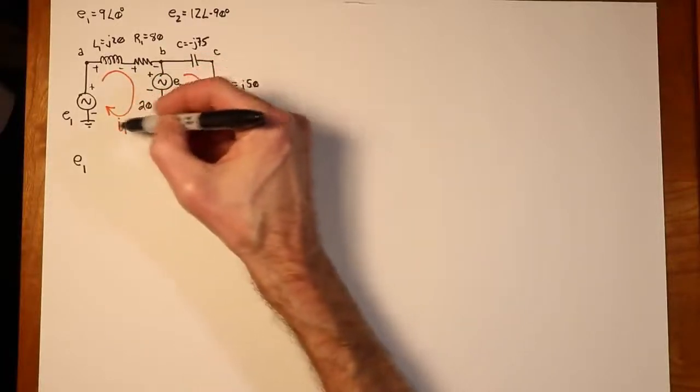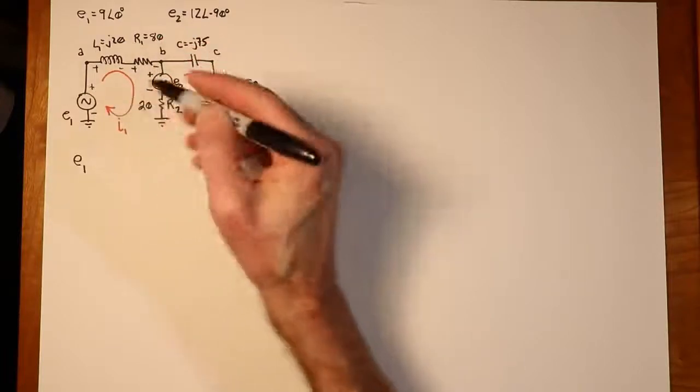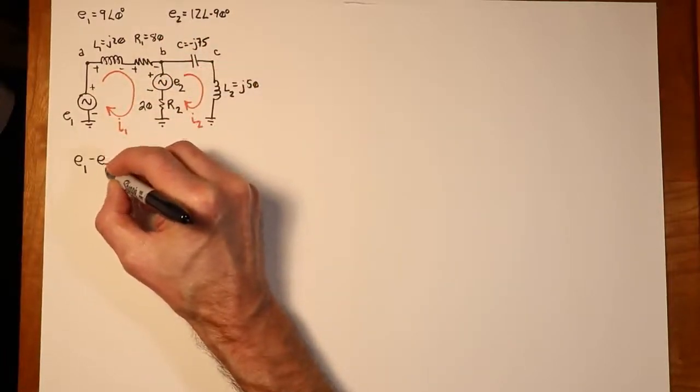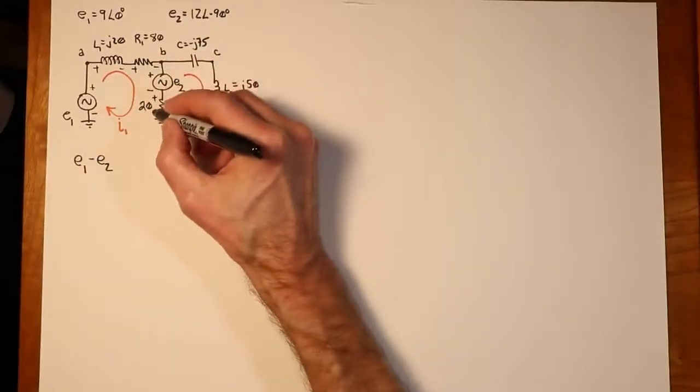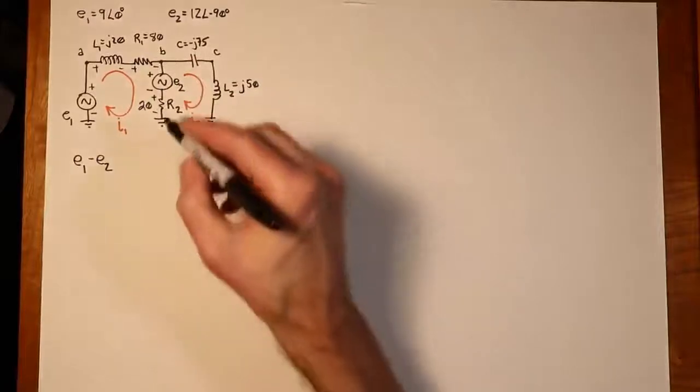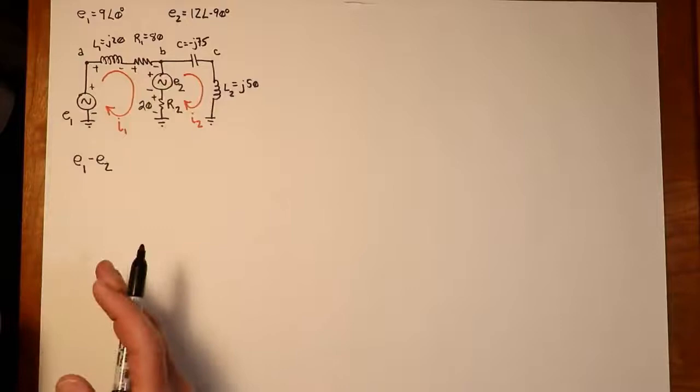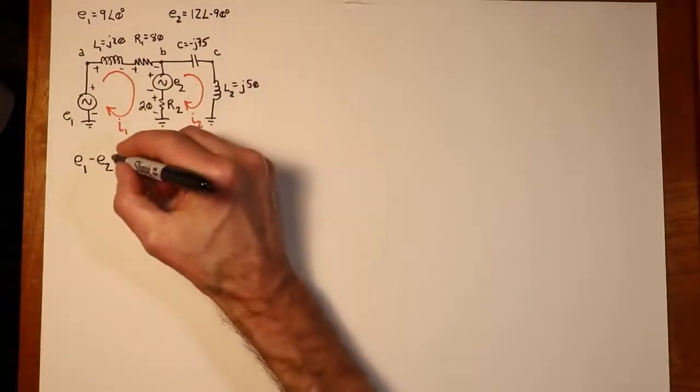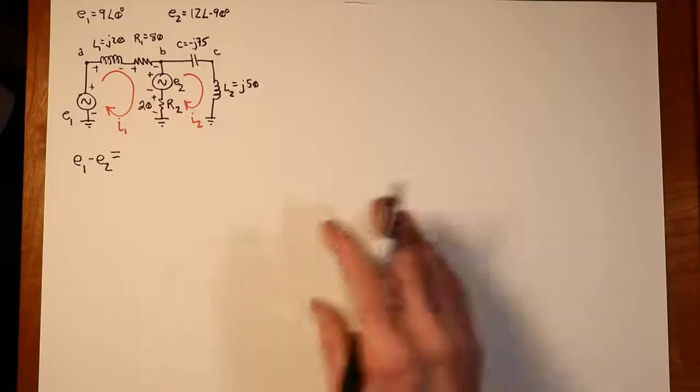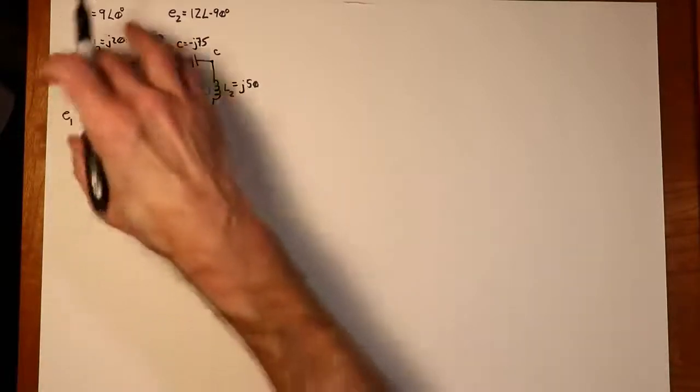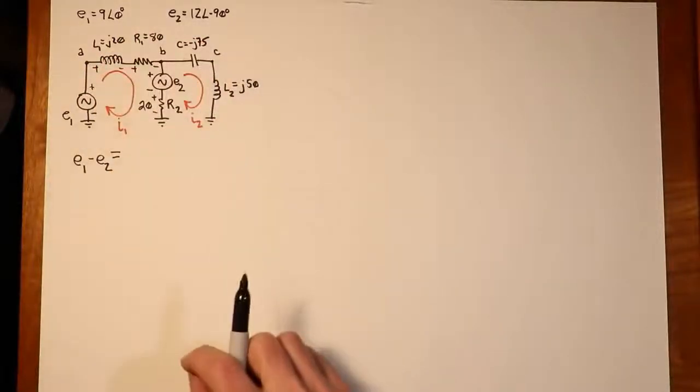And then finally we come through R2, which is plus to minus, like so, and we're back to ground. So these two sources, we put those off on one side because they're constants. And now we can talk about the drops that we see on the other components. So that's going to be the drop on L1 plus the drop on R1 plus the drop on R2.